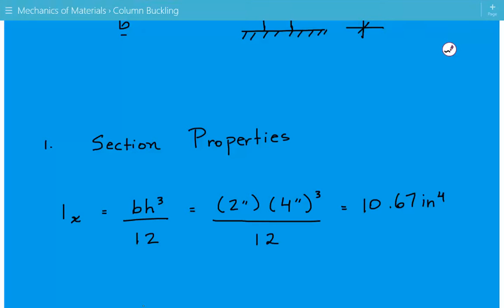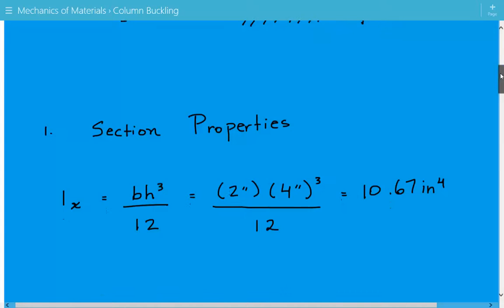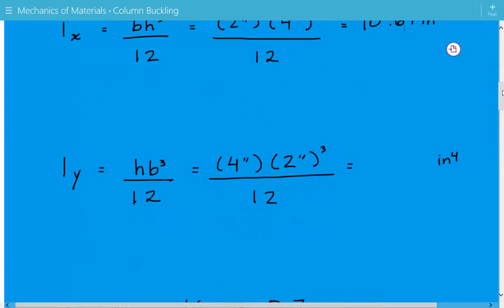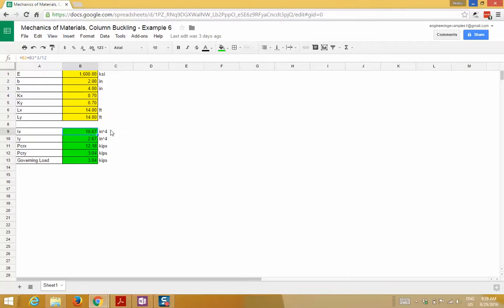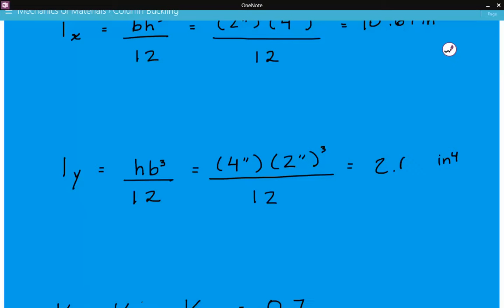The spreadsheet along with many other spreadsheets are available at our website at engineeringexamples.net. The moment of inertia about the Y axis is equal to HB cubed over 12. This equals 2.67 inches to the fourth power.